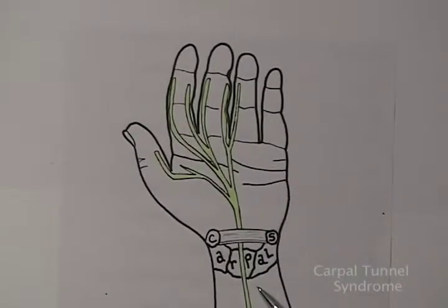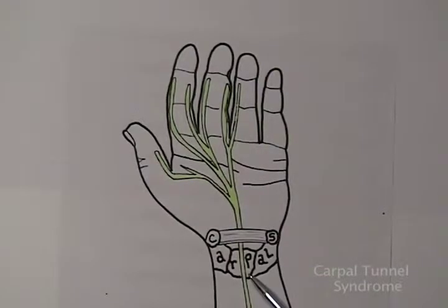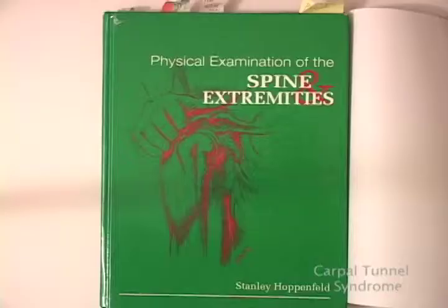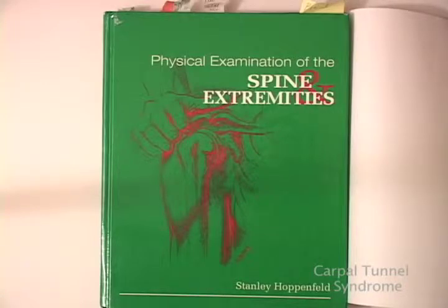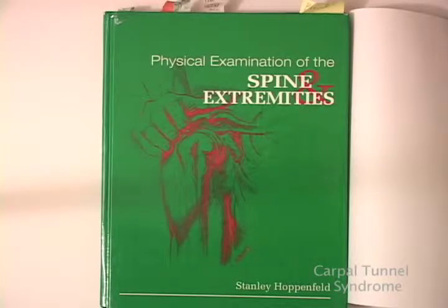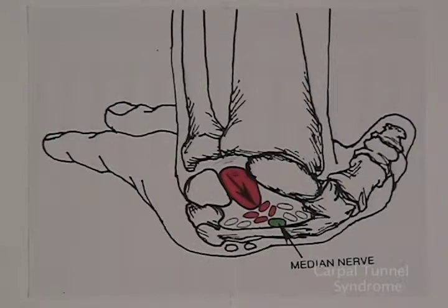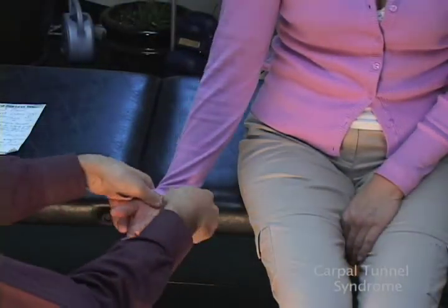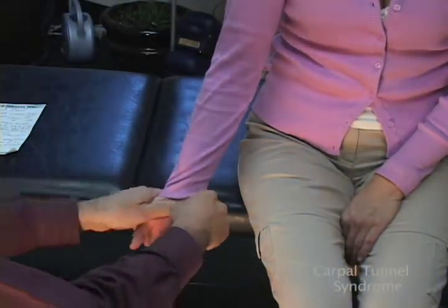Carpal tunnel syndrome occurs when a nerve which runs through the wrist becomes compressed. The most common reason for pressure on the median nerve is a dislocation of the lunate, one of the wrist bones. According to the best orthopedic medical textbooks, over 85% of the time, carpal tunnel syndrome is caused by a dislocation of the lunate. It can in most cases be effectively treated by resetting the lunate wrist bone with manipulation and balancing muscle tension around the wrist and arm.